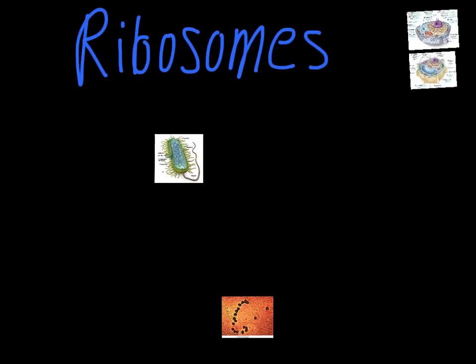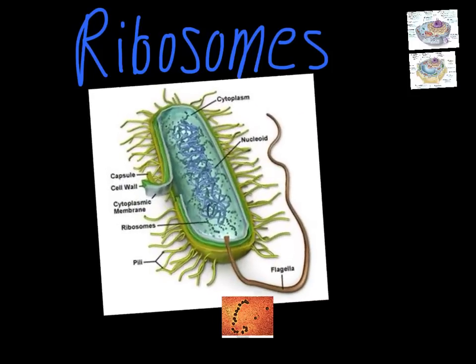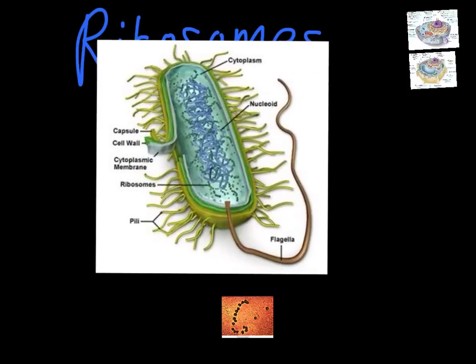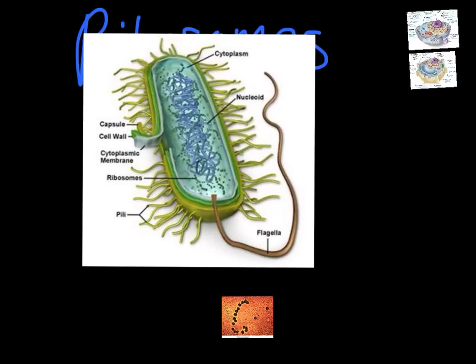One of the unique things about ribosomes is that they're also found in prokaryotic cells. The plant and animal cells we just talked about are eukaryotic. Prokaryotic cells are things like bacteria, and the only organelle that they have is the ribosomes. If you look at the rest of the prokaryotic cell, there are none of the other organelles we're talking about.